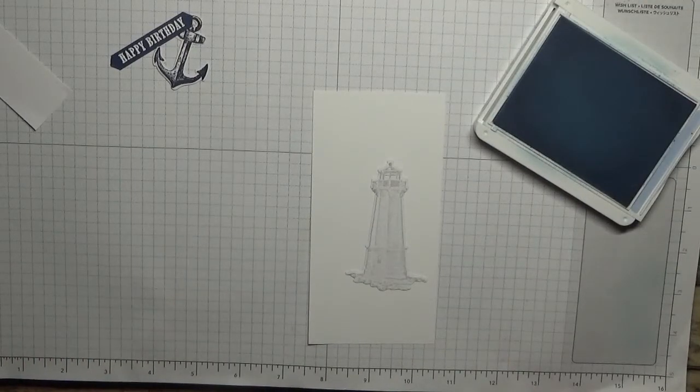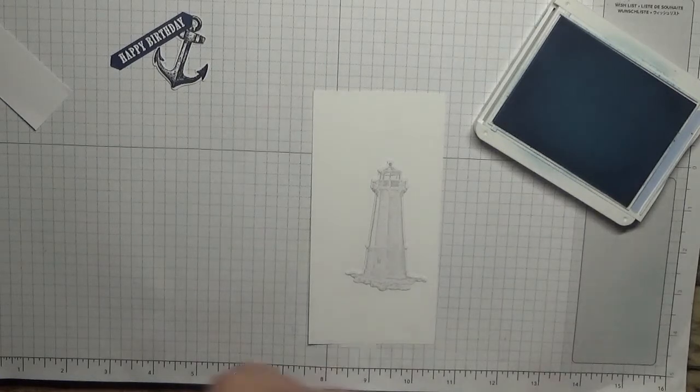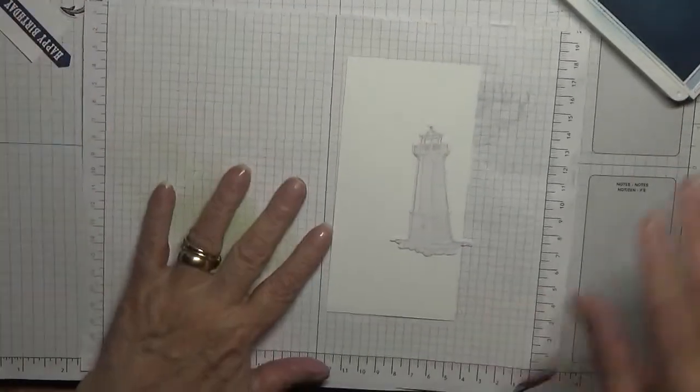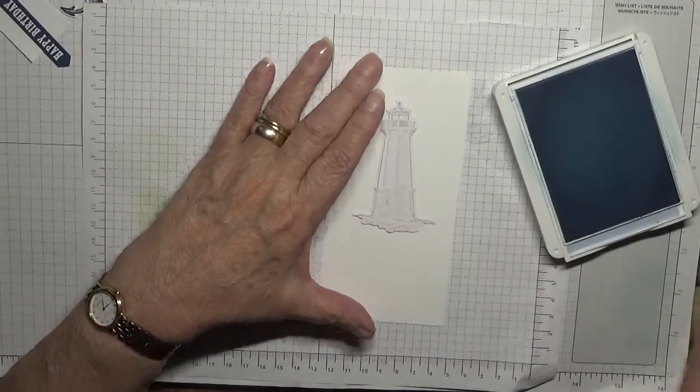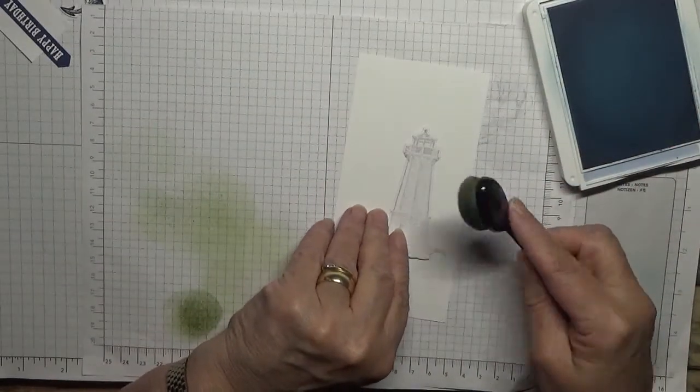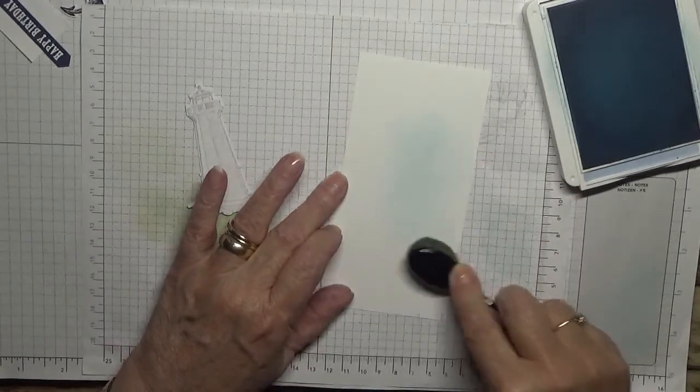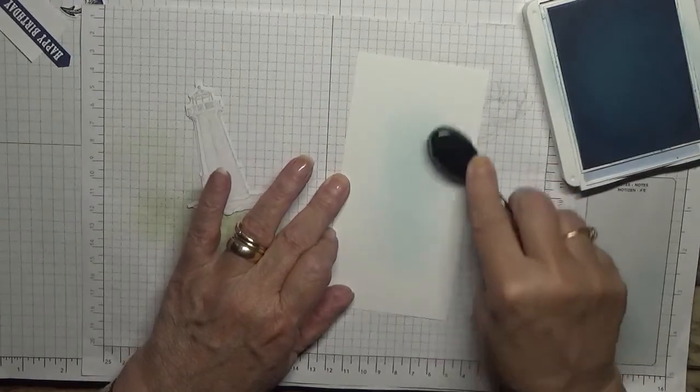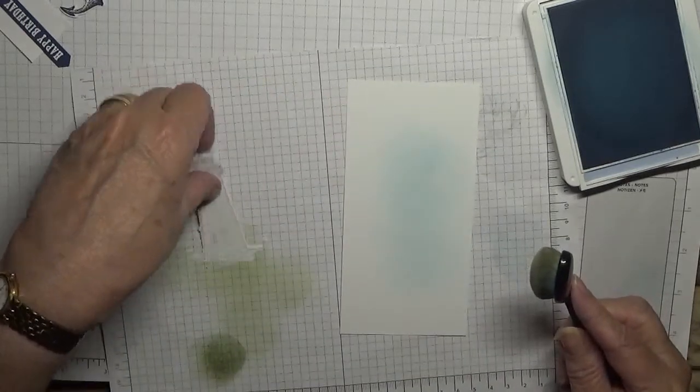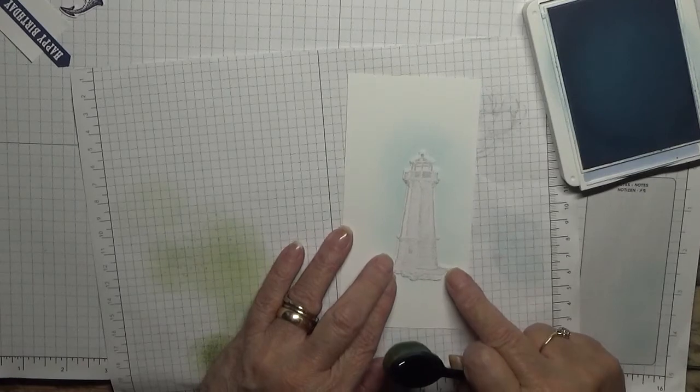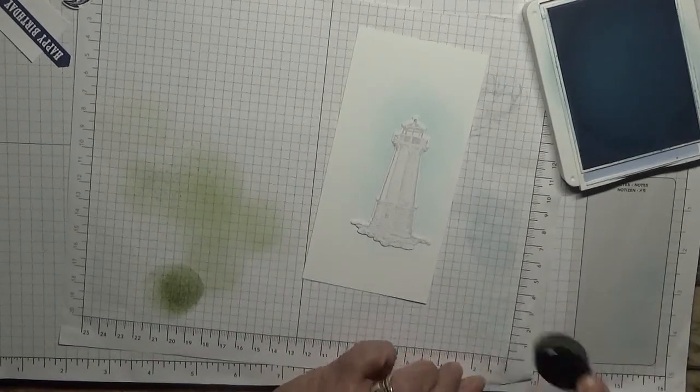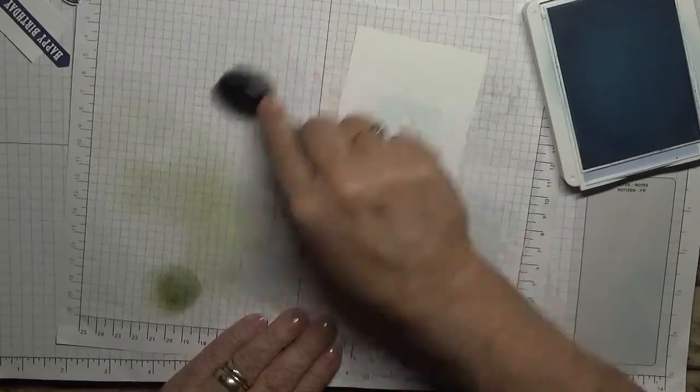With a brush and a piece of scrap paper, we're going to just brush a blue surround for this lighthouse. That's all I want to do there, nothing more - just a nice pale blue sky.